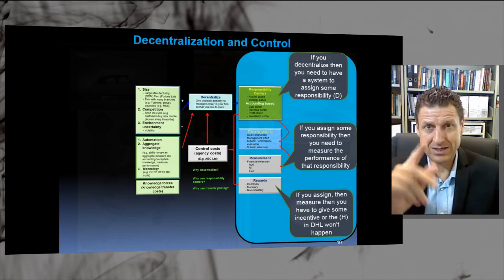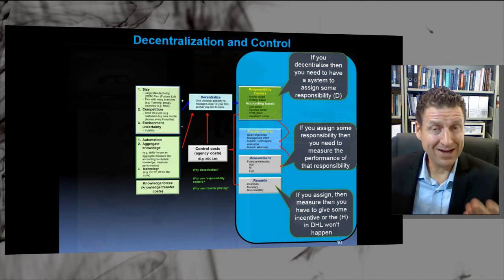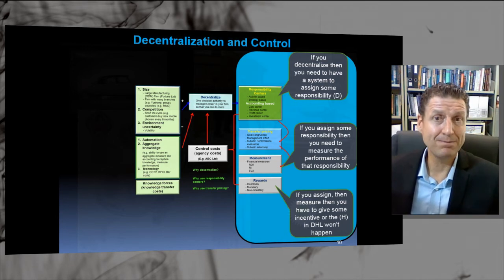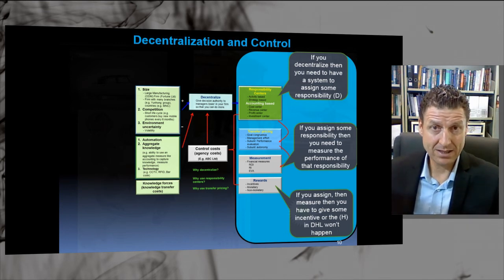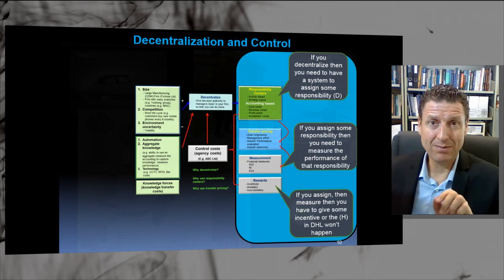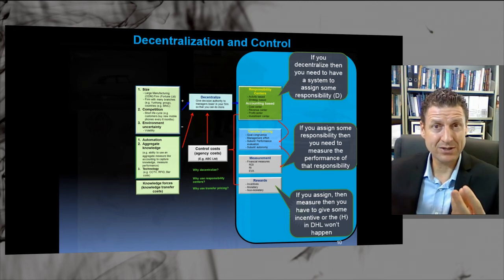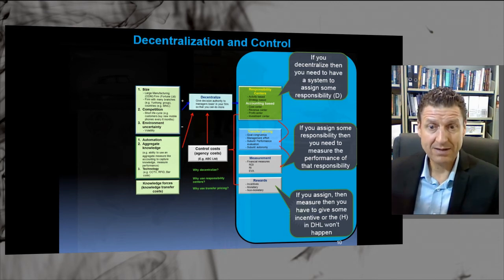Now we need a system to assign some responsibility. If you assign responsibility, then you need to measure the performance of that responsibility. And finally, if you assign and then measure, you need to have incentives — otherwise the hard work, the motivation of the manager, will not happen. In the DHL framework, that's direction, hard work, and personal limitations of the manager. So we have these three things we need to balance: we create a cost center, revenue center, investment center, or profit center, but we also need measures and incentives.